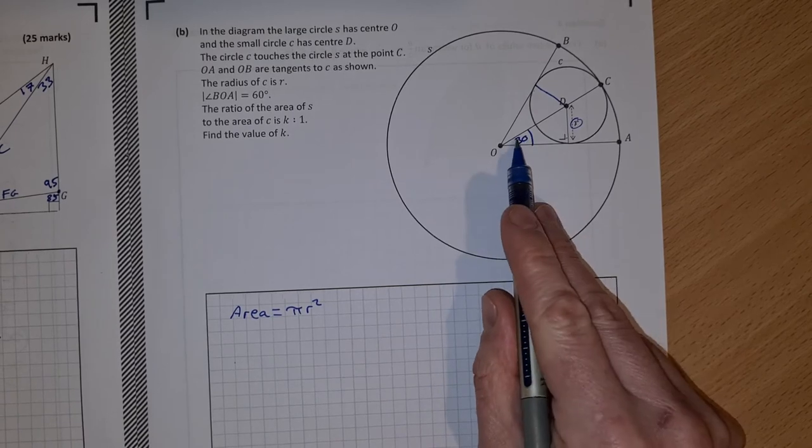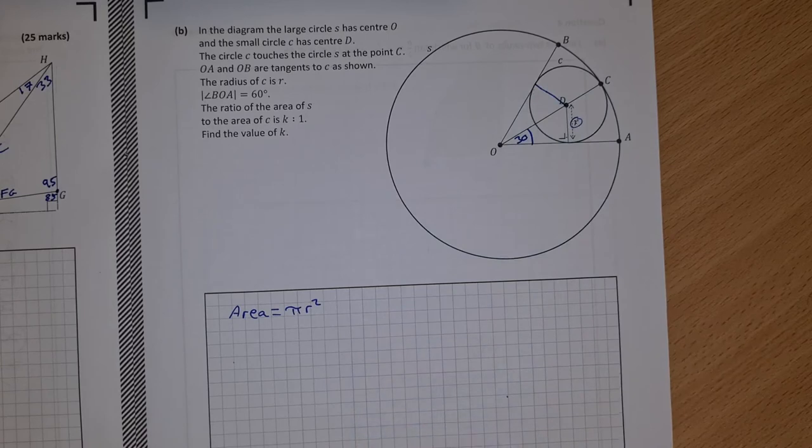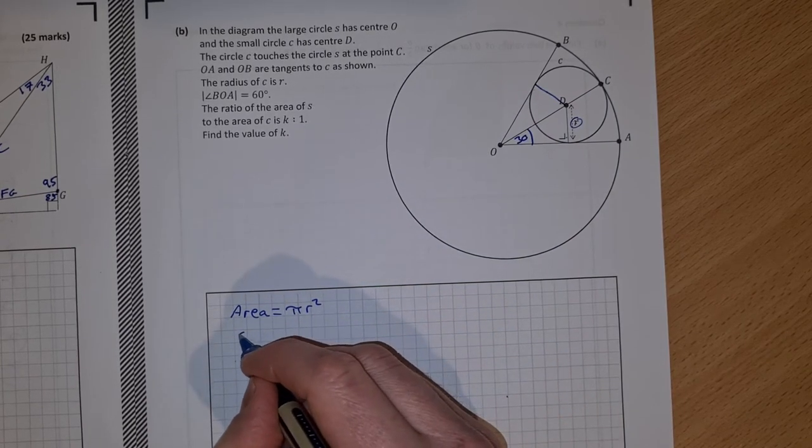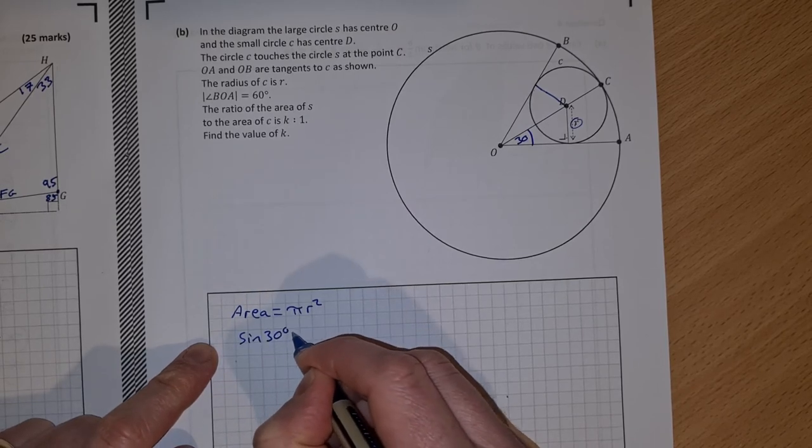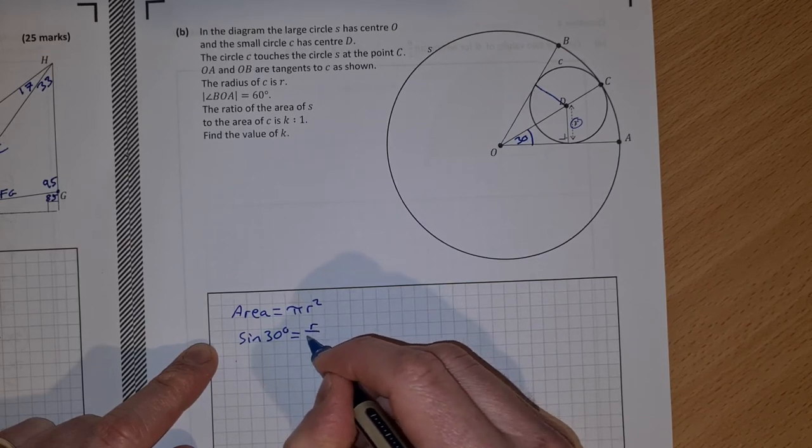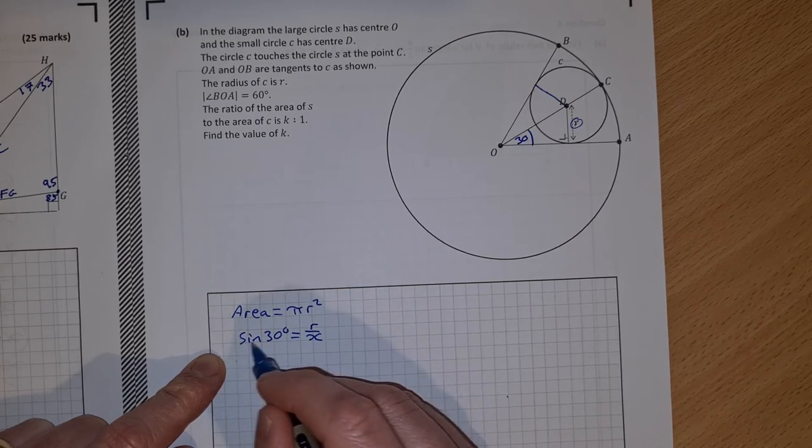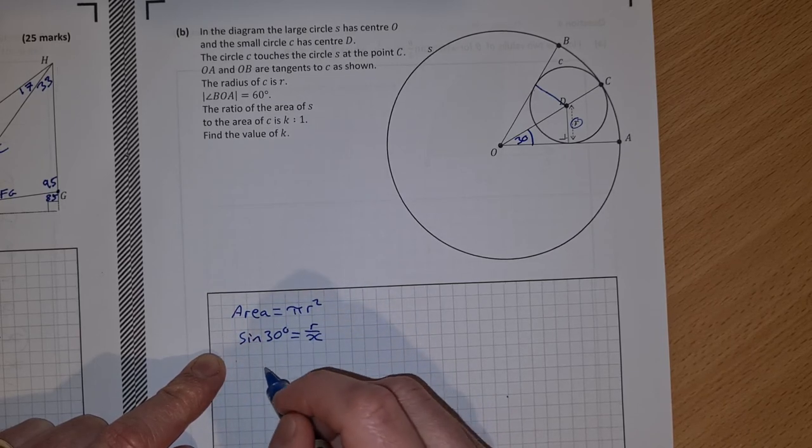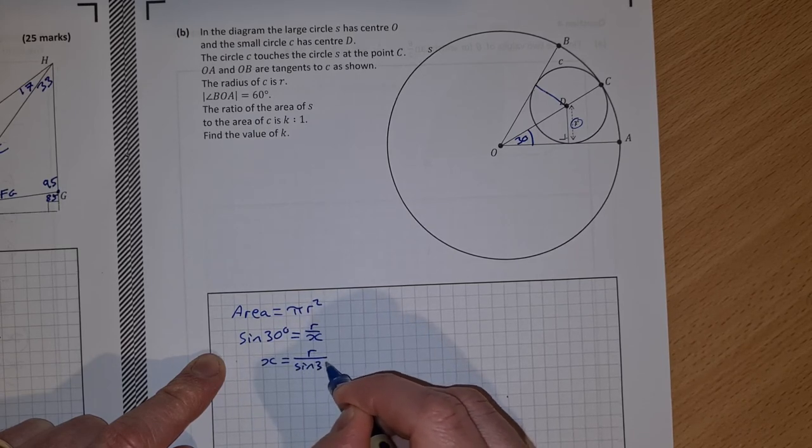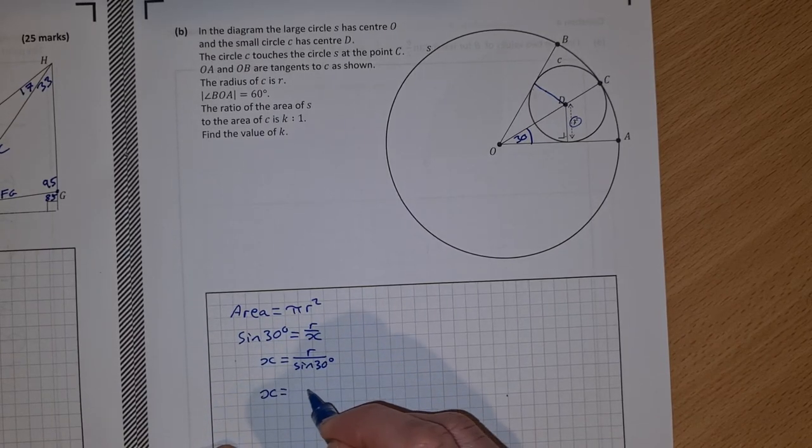So I can use a bit of trigonometry to find this distance here OD. So I can say the sine of 30 degrees is equal to r over, I'm going to call it X. So then X, multiply across by X, X sine 30 is equal to r divided by sine 30. X is equal to r over sine 30 degrees. Now sine 30 degrees is a half, so X is equal to r over a half.